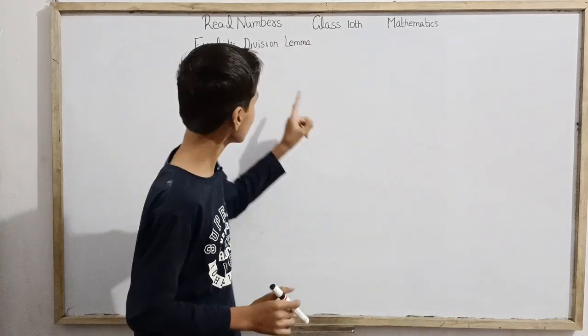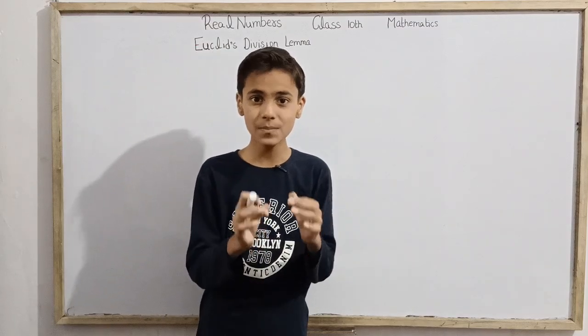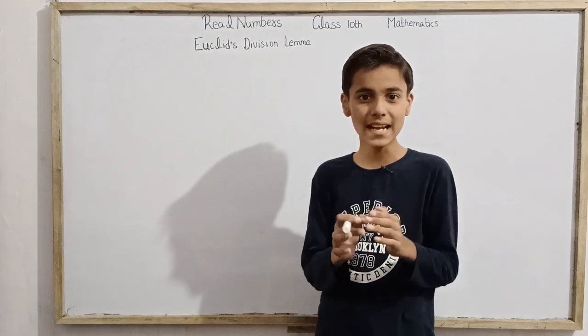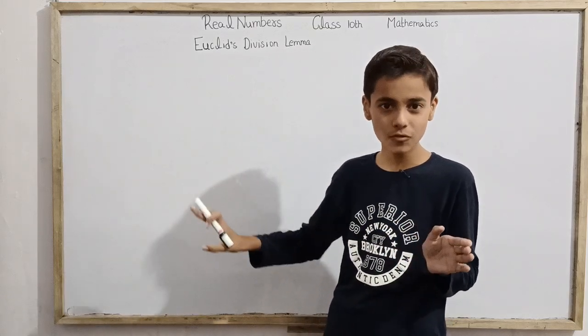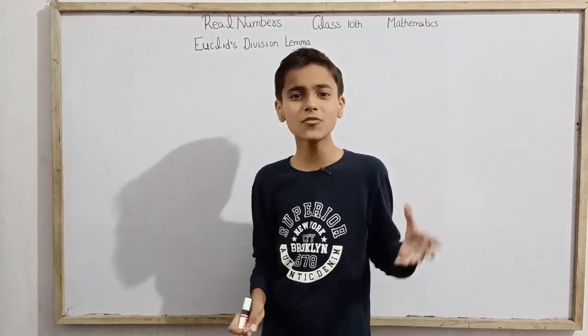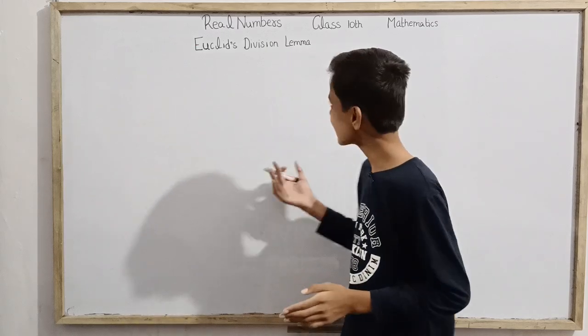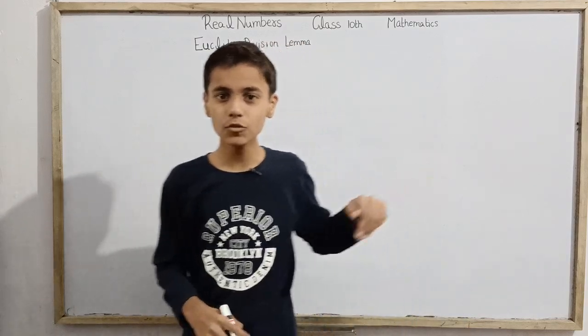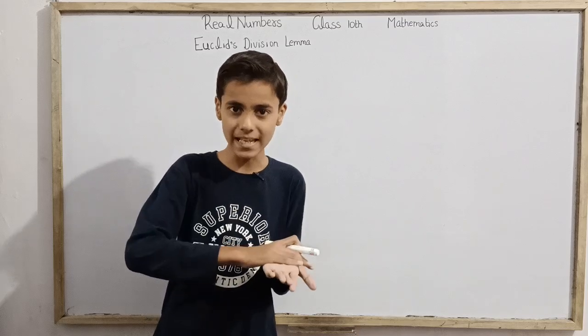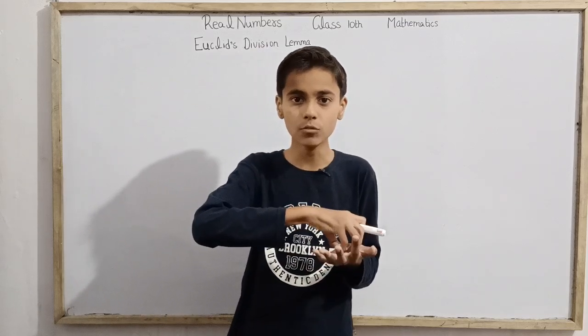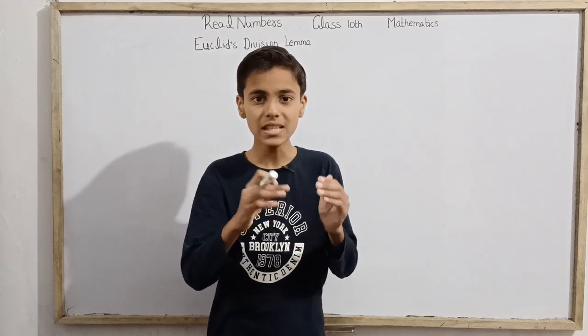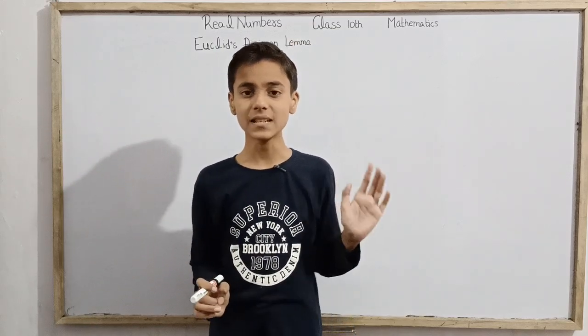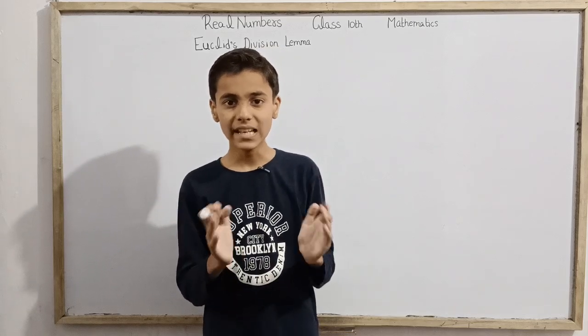Before understanding Euclid's Division Lemma, before understanding physics we need to understand what is physics after all. Same thing is right here. A lemma is a certain proven statement which is already proved. Now we use this statement and certain rules in mathematics to prove other rules. Then the statement is said to be a lemma.